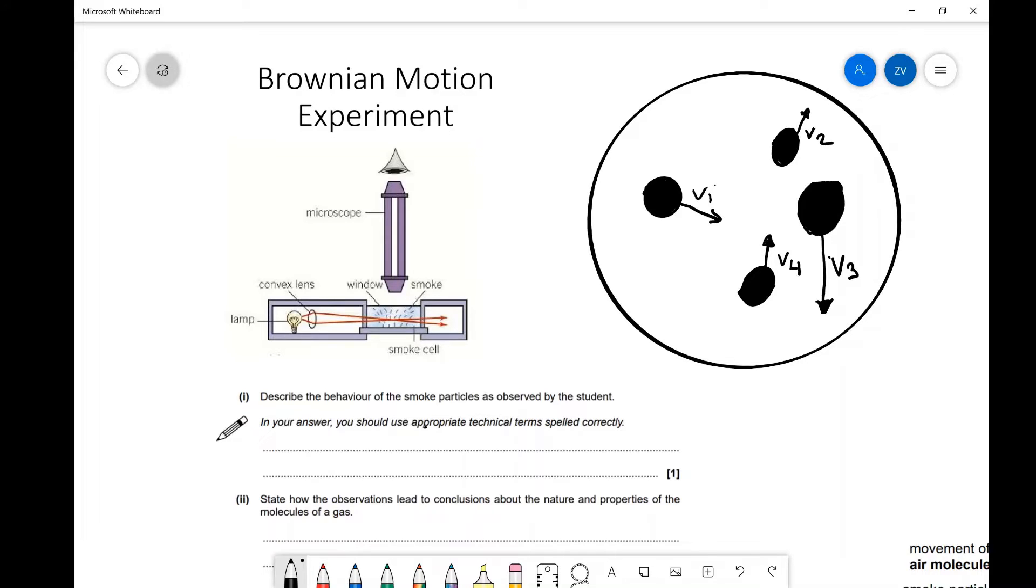This is just a little chamber which is filled with air and we've injected some smoke molecules in there. On the left, you've got a lamp. The sole purpose of this lamp is simply to provide a little bit of light to illuminate the area so that we could see it better.